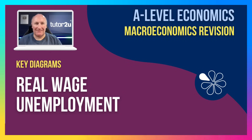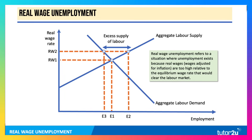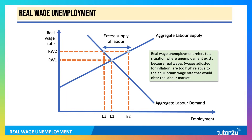This key diagram revision video looks at real wage unemployment. Real wage unemployment happens when unemployment exists because real wages — that's wages adjusted for inflation — are too high relative to the equilibrium wage that would clear the labour market.